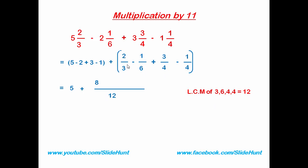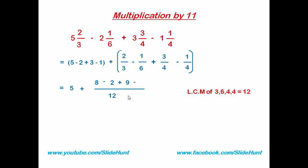4 times 2 is 8. Now 12 divided by 6 is 2, and 2 times 1 is 2. Now 12 divided by 4 is 3, and 3 times 3 is 9. Then 12 divided by 4 is 3, and 3 times 1 is 3. Now add or subtract the numerators: 8 minus 2 is 6, 6 plus 9 is 15, and 15 minus 3 is 12. So we get 12 by 12, which equals 1. And 5 plus 1 is 6. So the answer to this problem is 6.